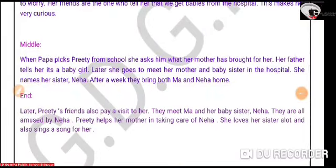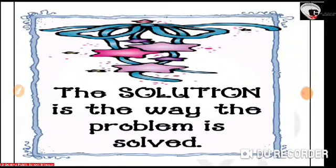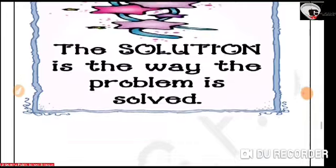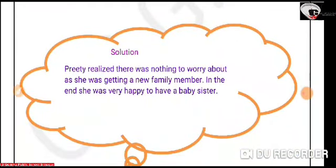So that is the plot of the story — the beginning, the middle and the end. Next comes the solution, which is the way the problem is solved. Preeti realized that there was nothing to worry about as she was getting a new family member. In the end, she was very happy to have a baby sister, and they all were very happy.